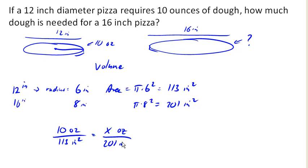So multiplying both sides by 201 gives... let's see, so we multiply both sides by 201 square inches, 201 square inches, so times 201 square inches. Notice that my square inches cancel, I'm left with ounces.